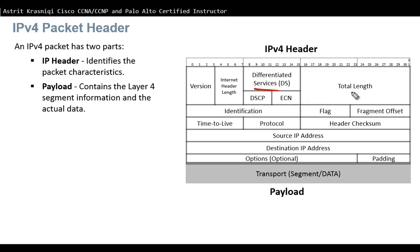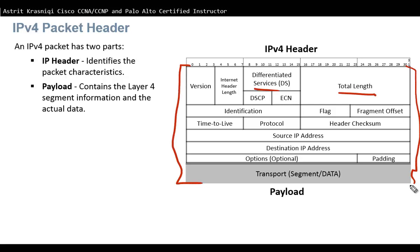The next field is Total Length. Total Length identifies how big the header is including the payload — so header plus payload together. This is different from Internet Header Length, which was just the header alone.